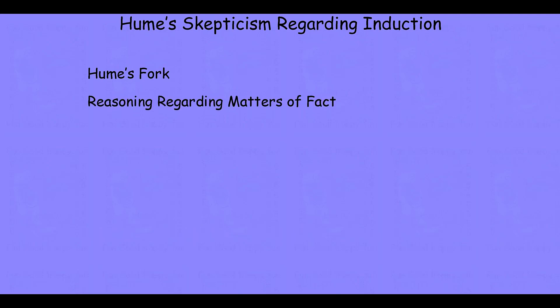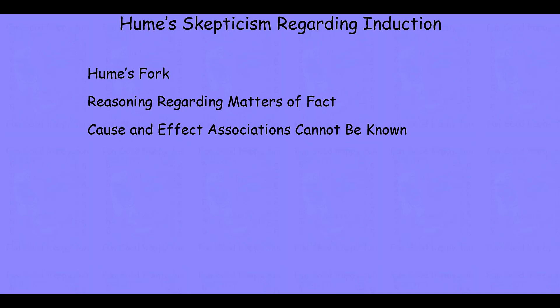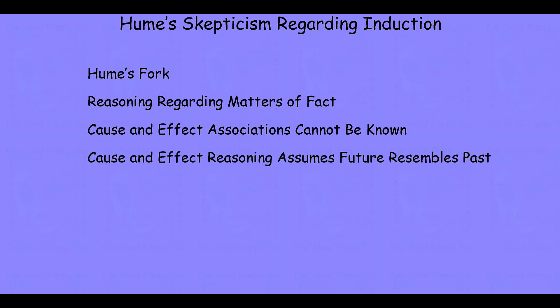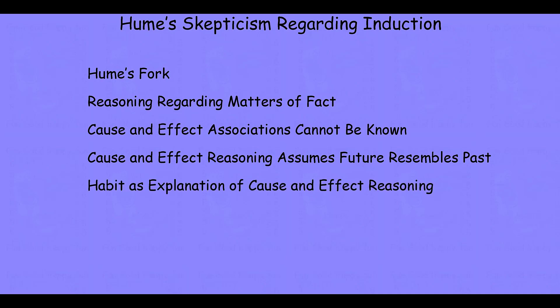In this lecture, we'll begin talking about Hume's fork. Then we'll discuss reasoning regarding matters of fact, noting that reasoning regarding matters of fact always involves cause and effect associations, and then Hume's arguments that cause and effect associations cannot be known. We'll then follow his argument to the conclusion that cause and effect reasoning assumes that the future resembles the past, and that this cannot be established or known. We'll end with his skeptical solution — offering an explanation of our cause and effect reasoning as a habit or custom — and then go over some takeaways from Hume and some potential problems with the framework.